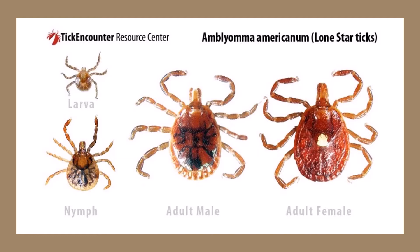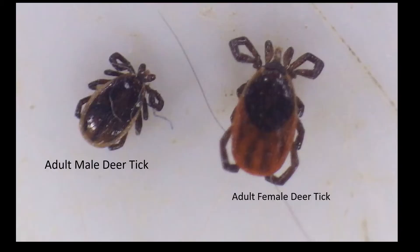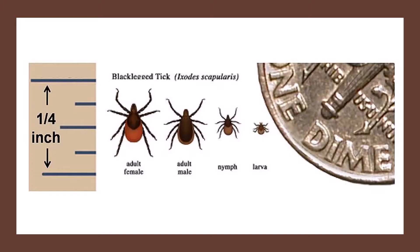The lone star tick harbors the bacteria that causes ehrlichiosis, but they are uncommon in Wisconsin, being found more in the South Central and Eastern United States. The black-legged tick or deer tick, on the other hand, is really bad news. They are now commonly found throughout Wisconsin and even in suburban and urban areas, and carry many pathogens that can cause serious illness in humans if left untreated. They are famous for transmitting Lyme disease, but they also transmit the bacteria that causes ehrlichiosis and anaplasmosis, the parasite that causes babesiosis, and the Powassan virus.